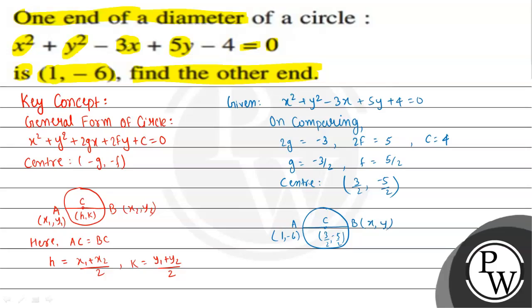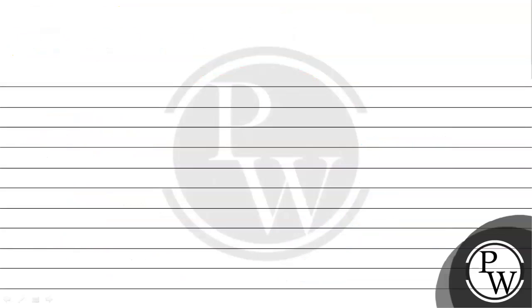C is the center of the circle, so AC = BC. The center C has coordinates (3/2, -5/2), which we can call (h, k).